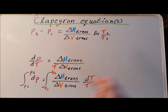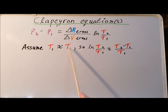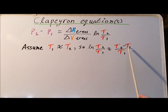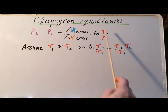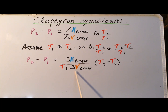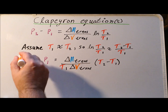To simplify further, we use a useful approximation: assuming T1 and T2 are close together, T2/T1 is only slightly greater than 1, so the natural log of T2/T1 can be approximated by (T2 minus T1) divided by T1. Substituting this into the equation gives us that P2 minus P1, the change in pressure, is equal to delta H of transition divided by T1 times delta V of transition, times the quantity T2 minus T1. This is the Clapeyron equation.